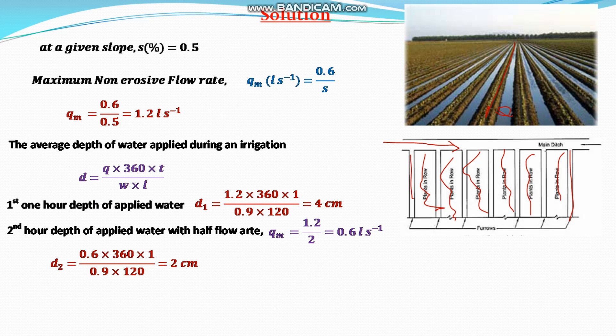Instead of 1.2, 0.6 is applied, and the others are same because the next is 1 hour and 0.9 and 120 are same. So the water depth is 2 centimeter. Therefore, the total depth of irrigation will be equal to d1 plus d2, that is 4 plus 2 equals 6 centimeter. The total depth of application of irrigation water is equal to 6 centimeter.